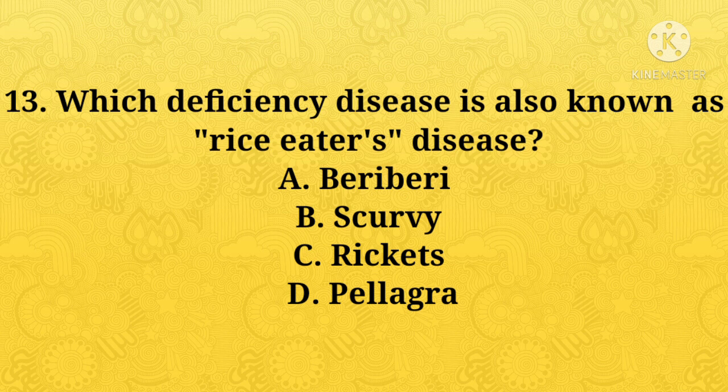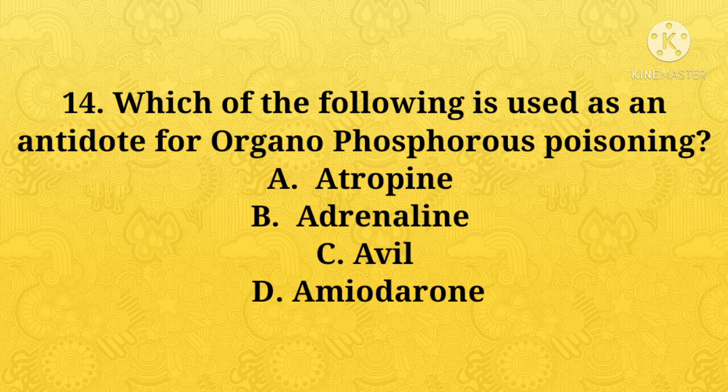Which deficiency disease is also known as rice eaters disease? A: beriberi, B: scurvy, C: rickets, D: pellagra. Option A, beriberi, is the right answer. Which of the following is used as an antidote for organophosphorus poisoning? A: atropine, B: adrenaline, C: naloxone, D: amiodarone. Option A, atropine, is the right answer.